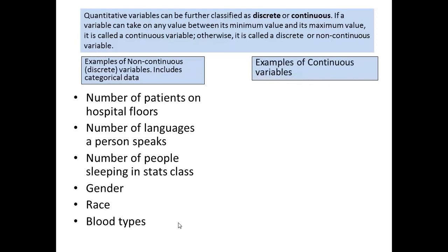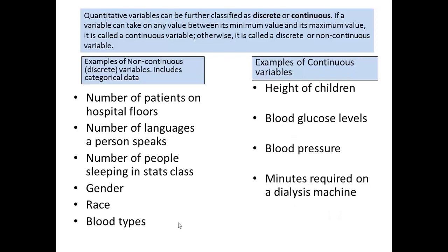Examples of continuous variables include height of children, blood glucose levels, blood pressure, and minutes required on a dialysis machine. All of these have an order to them and they have measurable differences between the integers of each one.